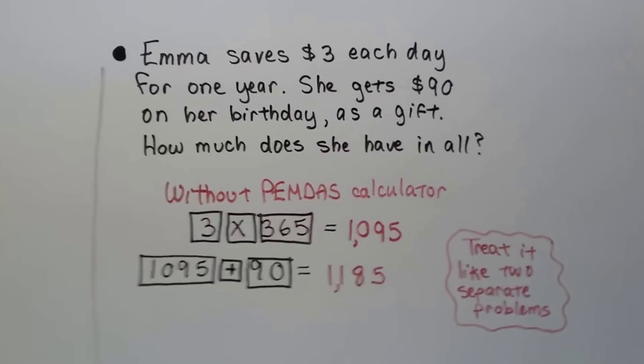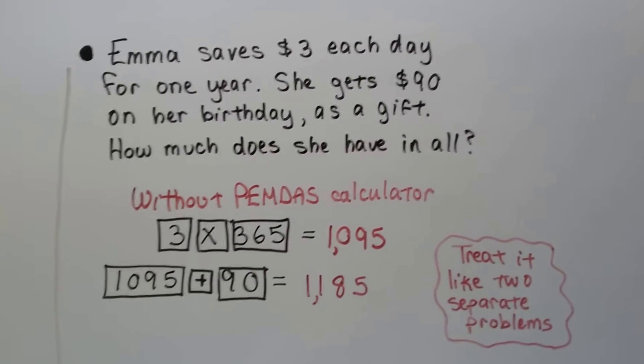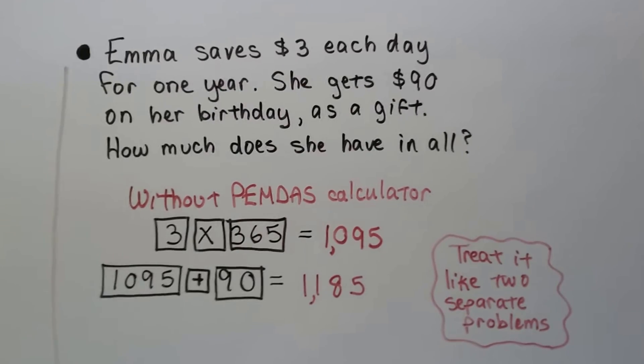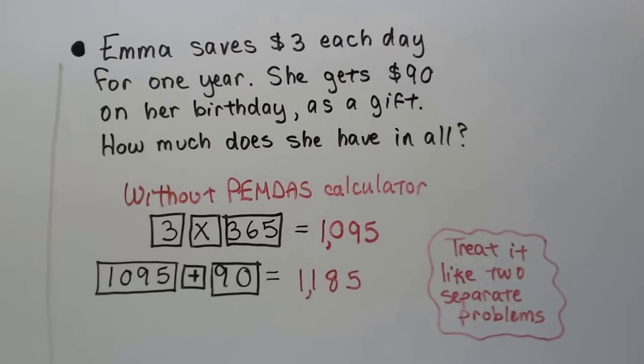Let's try another one. This is going to be without PEMDAS. Emma saves $3 each day for one year, and she gets $90 on her birthday as a gift. How much does she have in all? So, without PEMDAS, we have to treat this like 2 separate problems.